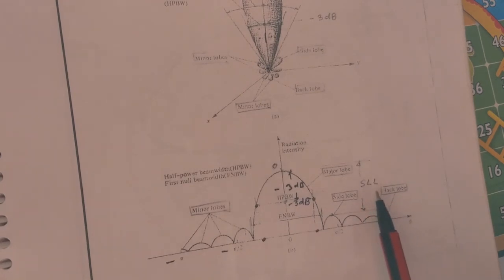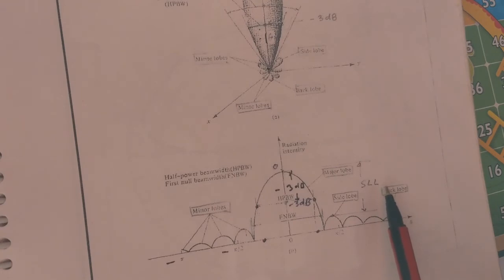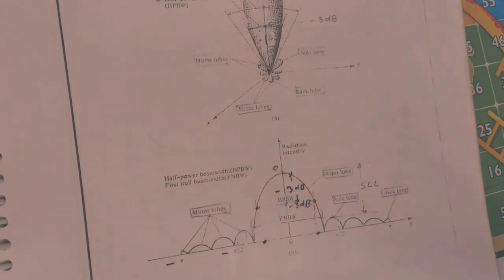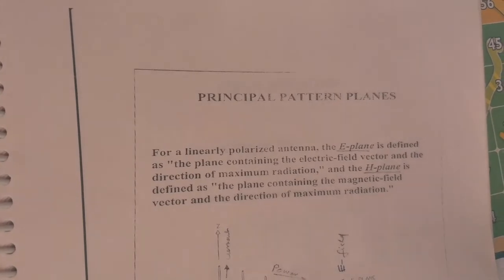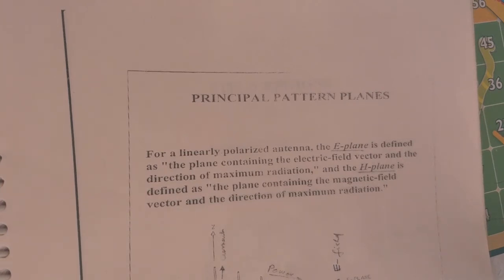For a good antenna system the side lobe level should be as high as possible — for radar applications this parameter is very important, and side lobe level should be more than 30 dB. For a linear polarized antenna, the E-plane is defined as the plane containing the electric field vector and the direction of maximum radiation, and the H-plane is defined as the plane containing the magnetic field vector and the direction of maximum radiation.